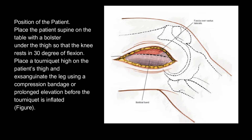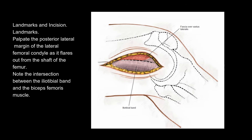Position of the patient: place the patient supine on the table with a bolster under the thigh so that the knee rests in 30 degrees of flexion. Place a tourniquet high on the patient's thigh and exsanguinate the leg using a compression bandage or prolonged elevation before the tourniquet is inflated.